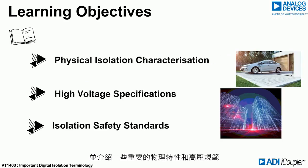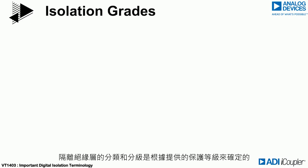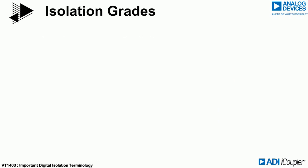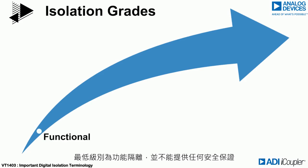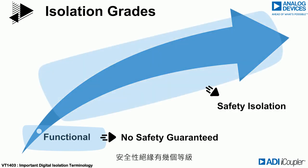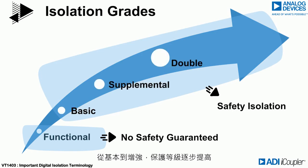We will review the important physical characteristics and high voltage specifications. Insulation is categorized and graded based on the level of protection offered. The lowest level is functional isolation, which doesn't offer any guarantee of safety. Safety insulation has several grades offering increasing levels of protection, from basic up to reinforced.